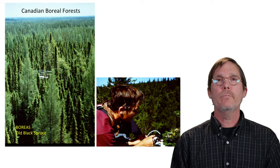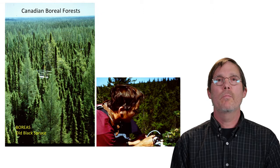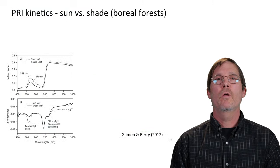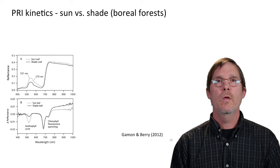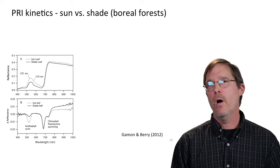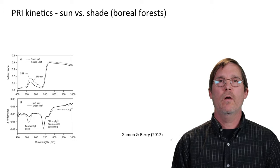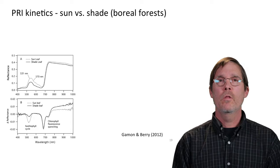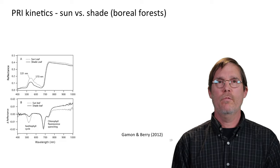We've also done work in the boreal forest. We asked how much PRI varies within the canopy under different conditions — a study of top-of-canopy versus leaves in deep shade at the bottom. The top panel shows the reflectance of two leaves, and you can see the two wavelengths of PRI for a sun leaf and a shade leaf. The bottom shows the delta reflectance from dark state to light state.